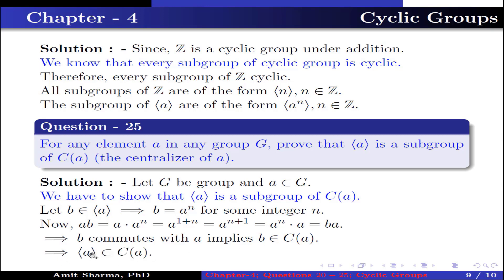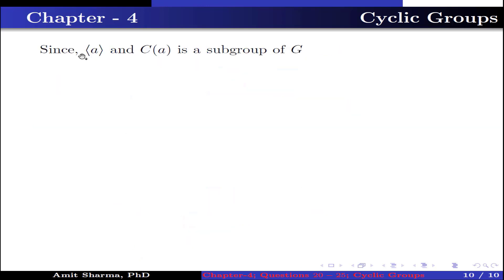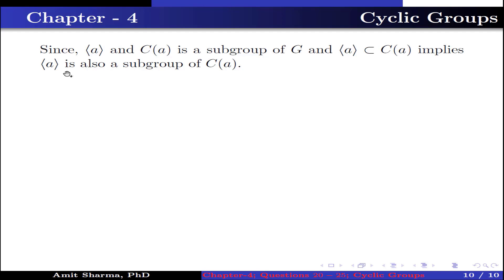This implies the subgroup generated by A is contained in the centralizer of A. Since the centralizer of A is a subgroup of G and the subgroup generated by A is contained in the centralizer of A, this implies the subgroup generated by A is also a subgroup of the centralizer of A. Hence the subgroup generated by A is a subgroup of the centralizer of A.